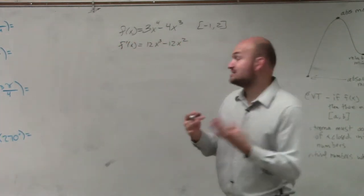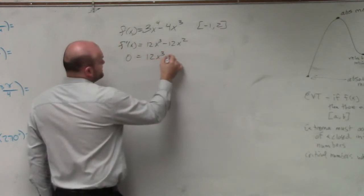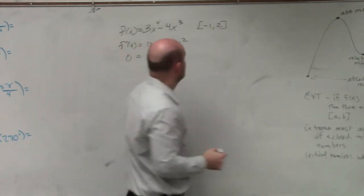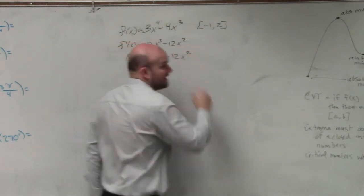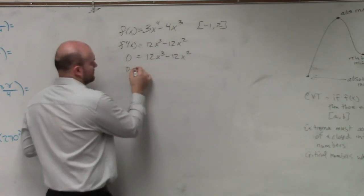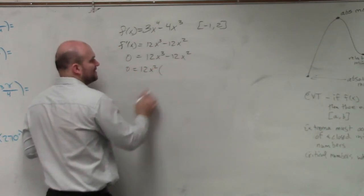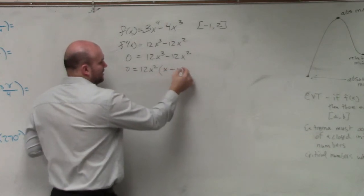But then we've got to set that equal to 0 to find any critical numbers. And I see that this is factorable and that I could factor out a 12x². So I'll factor out a 12x².